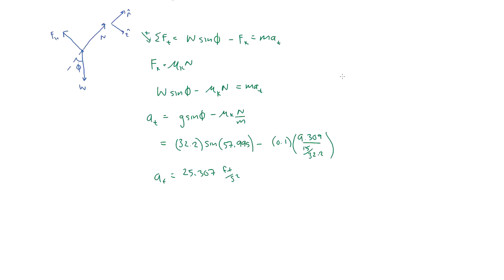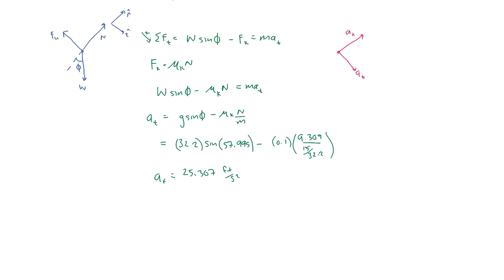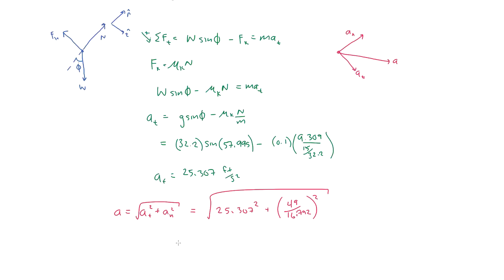To find the magnitude of the total acceleration, we draw the acceleration vector: it has a tangential component AT and a normal component AN because the object is moving along a curve. Adding these two vectors, the magnitude of total acceleration is: |a| = √(AT² + AN²) = 25.475 feet per second squared. That is the rate of increase of the particle's speed at point A.